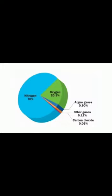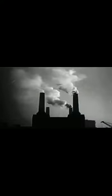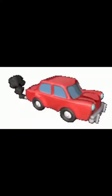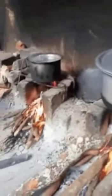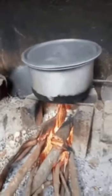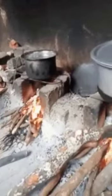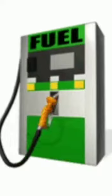The burning that takes place in factories, vehicles, and stoves in kitchens gives out smoke. This smoke mixes with the air around us and is very harmful for us. Fuels like coal, petrol, and diesel give out smoke while burning, which mixes with the air. This can cause many ill-health effects because it is not good for our health — it is harmful.